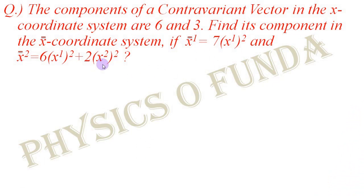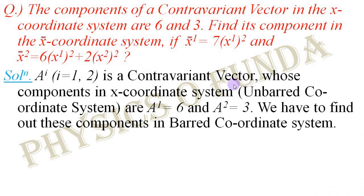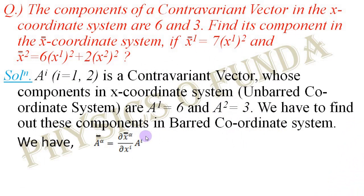Let us consider contravariant vector a-i, where i runs from 1 up to 2. The components in the unbarred coordinate system of this vector are a1 equal to 6 and a2 equal to 3 according to the question. We have to find out these components in the barred coordinate system. For that, we use the transformation equation: a-bar alpha is equal to del x-bar alpha over del xi, times a-i.